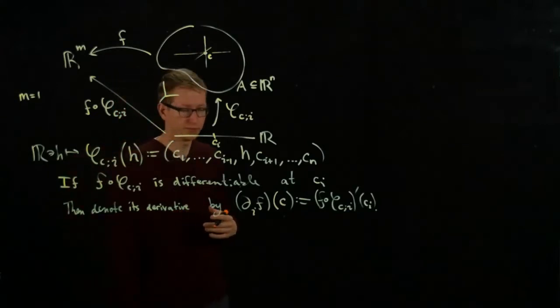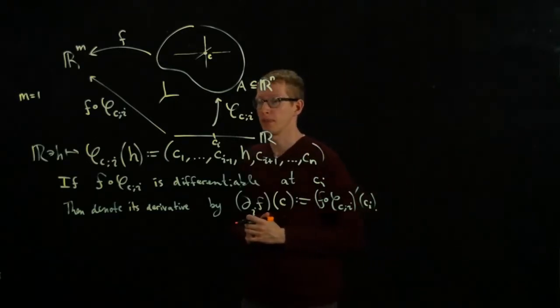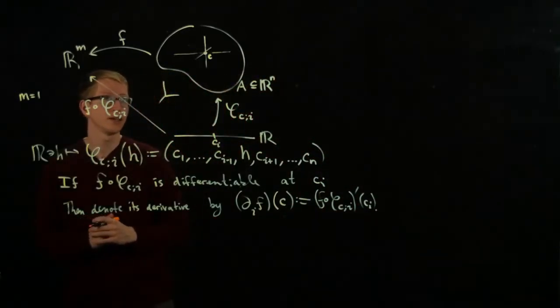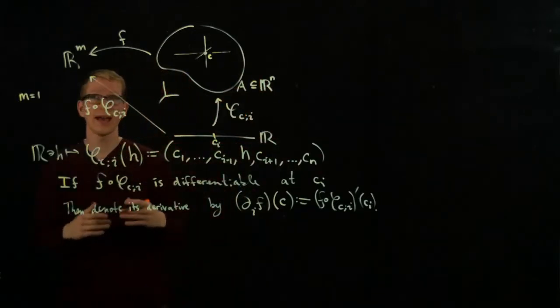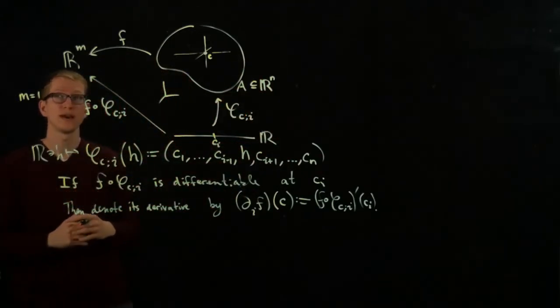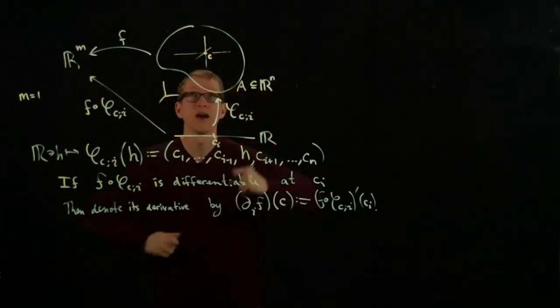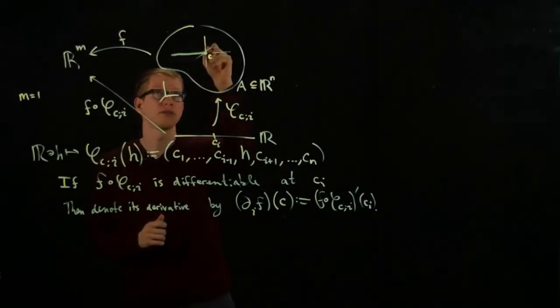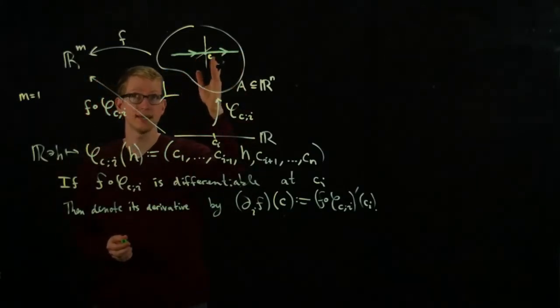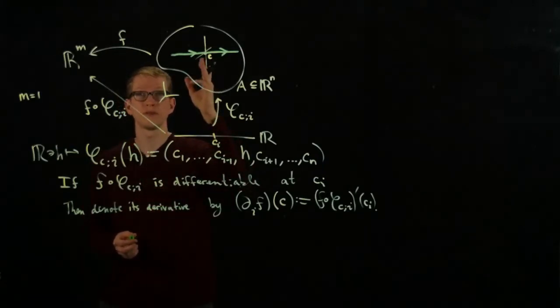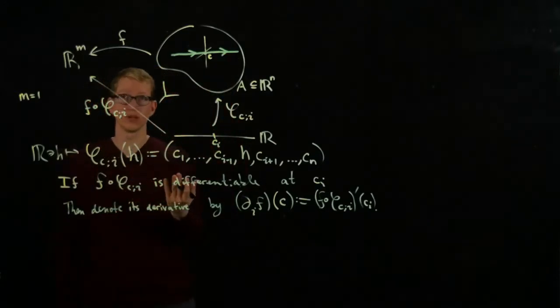With this definition, we can think about it yet in one more way that's convenient. Instead of looking at the inclusion of this axis, we can imagine we have a curve passing through the point C. It hits C exactly at zero, and the derivative of this curve is precisely the i-th unit vector.